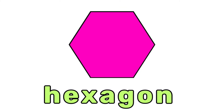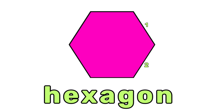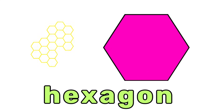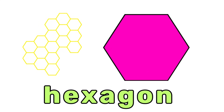This is a hexagon. Can you say hexagon? A hexagon has six sides, like a honeycomb. Say it with me: hexagon.